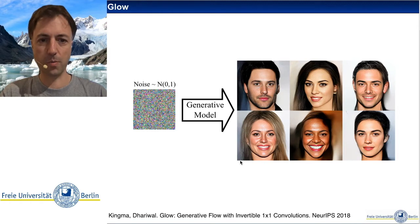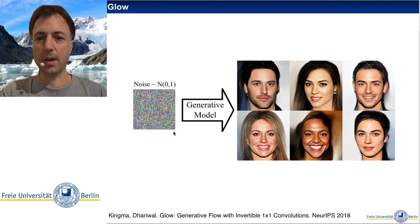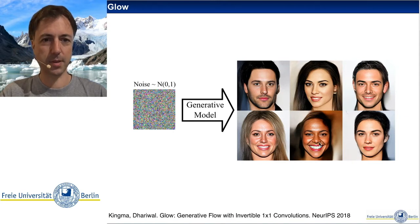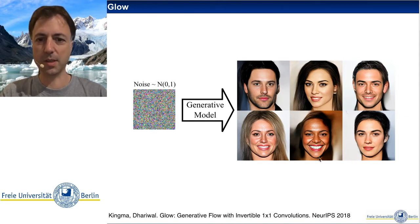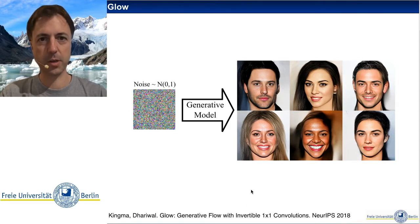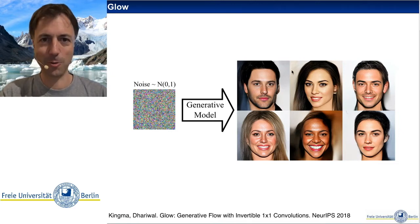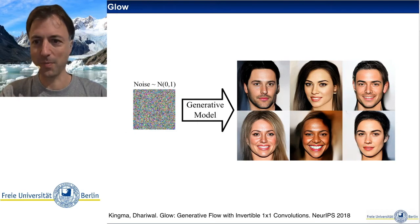This is the Glow model, a few years old now, so these things are much better now. These are samples of celebrity images generated by the flow — completely generated by the machine. These people do not exist, but they certainly look important. The machine has clearly learned something about celebrities based on the images.